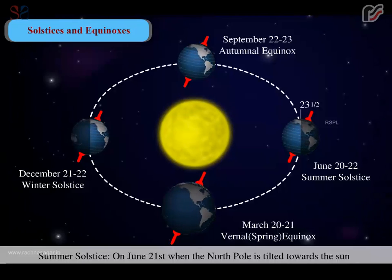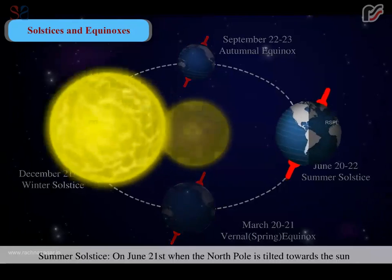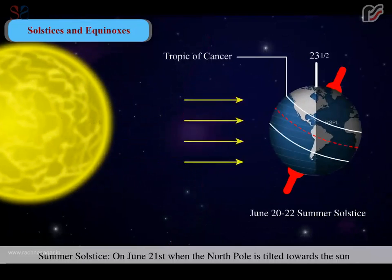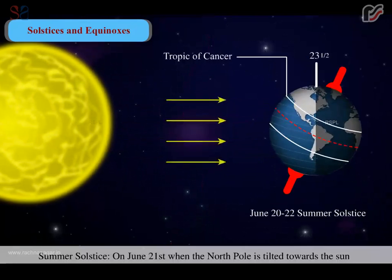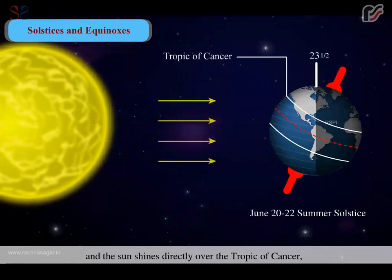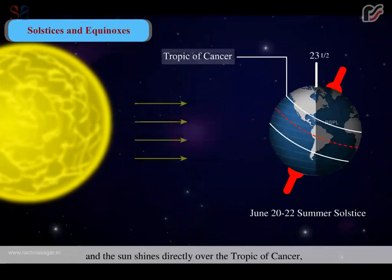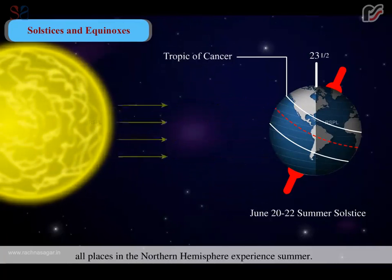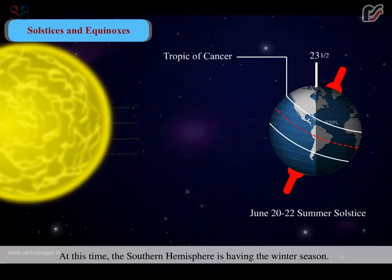Summer solstice: On June 21st, when the north pole is tilted towards the sun and the sun shines directly over the Tropic of Cancer, all places in the northern hemisphere experience summer. At this time, the southern hemisphere is having the winter season.